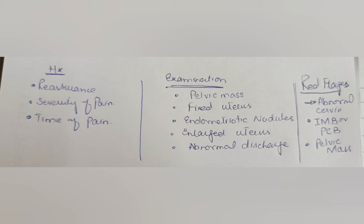After taking history, proceed to pelvic examination. Look for findings that suggest pathology causing dysmenorrhea. A pelvic mass may indicate endometrioma; a fixed uterus suggests adhesions; palpable endometriotic nodules may be found on the pouch of Douglas or uterosacral ligament. An enlarged uterus suggests fibroids, and abnormal discharge — foul-smelling, sticky, or discolored — suggests Pelvic Inflammatory Disease.